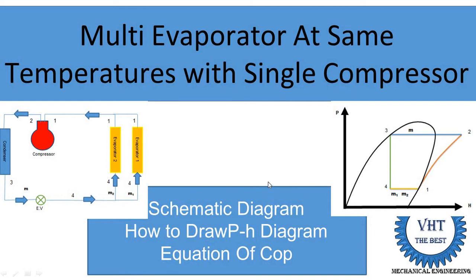First I explain what is the meaning of multi evaporator. Multi evaporator means more than one evaporator is used, and these are at the same temperature. So multi evaporator means it is installed at different places but the temperature is the same.